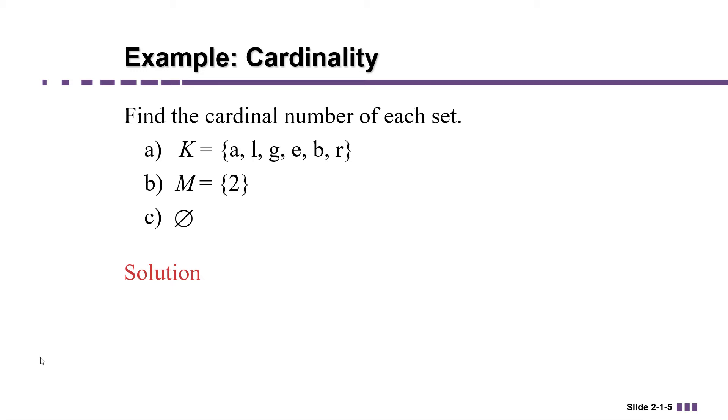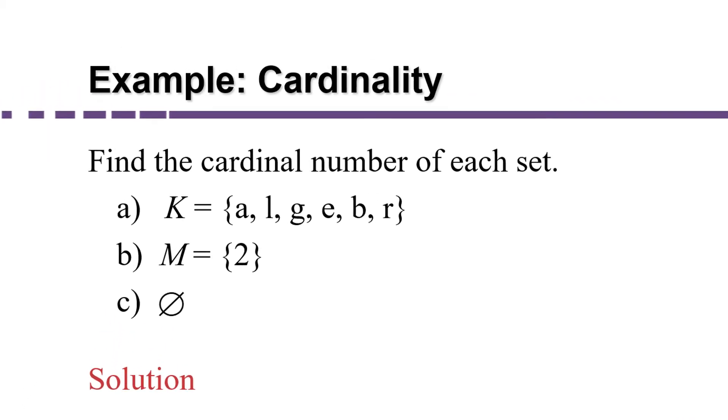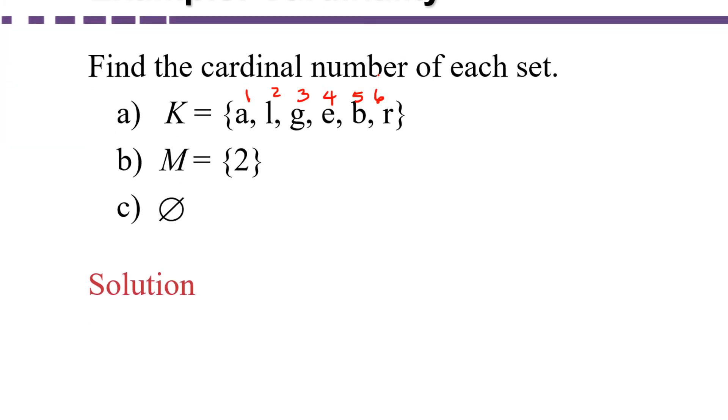So for example, you might be given a set and asked to find its cardinal number. In part A here, we have the set K and it contains the letters lowercase a, l, g, e, b, and r. So if we want to find the cardinal number, all we have to do is count one, two, three, four, five, six elements in the set K. So that means the number of elements in K is six, or the cardinality of K is six.